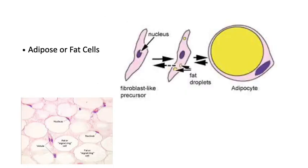Adipose cells, also known as fat cells, synthesize and store fat. They have a fibroblast-like precursor. Fat droplets accumulate and appear as one single fat droplet, pushing the cytoplasm and nucleus to the periphery. When stained with H&E, the fat is dissolved during processing, so only a thin layer of cytoplasm and the nucleus are seen, giving the appearance of a signet ring. Special stains such as Sudan-3 are used for fat.